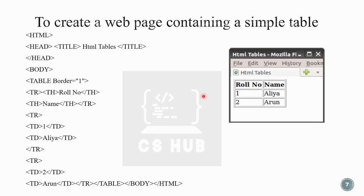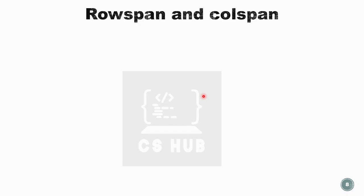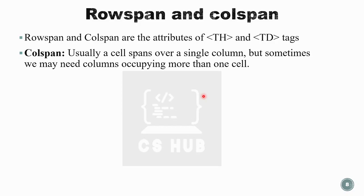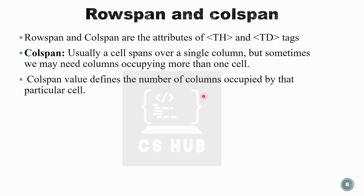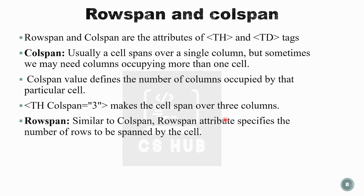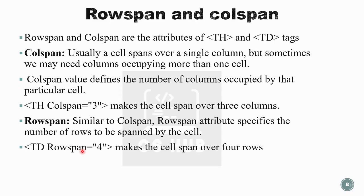The next concept is rowspan and colspan. These are attributes of th and td tags. Colspan: normally a cell spans over a single column, but sometimes we need a cell to occupy more than one column. The colspan value defines the number of columns occupied by that cell — for example, th colspan equal to three makes a cell span over three columns. Similarly, rowspan specifies the number of rows spanned by a cell — td rowspan equal to four makes a cell span over four rows.